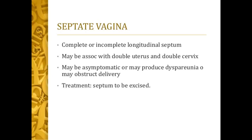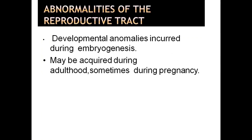Septate vagina: a complete or incomplete longitudinal septum may be associated with a double uterus and double cervix. It may be asymptomatic or may produce dyspareunia, and it may obstruct delivery. Treatment: the septum is to be excised.